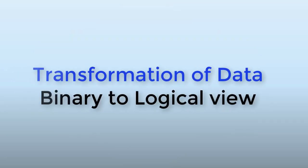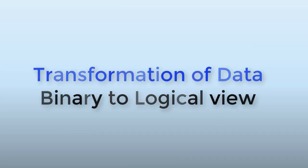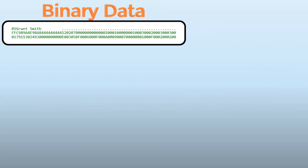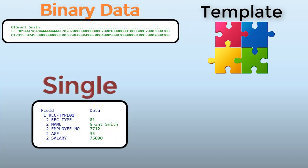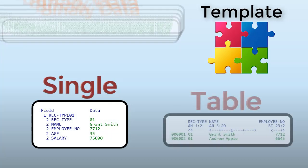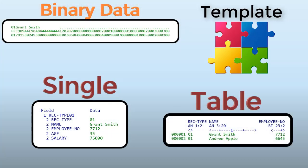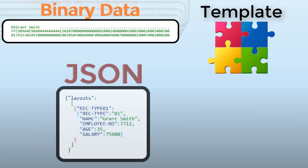Here is a simple example of the capability of ZDT to understand your binary data and the transformation from raw binary data to the logical view. We have single and table views, which are supported by view, edit and print utilities. JSON objects representing the data can also be produced for processing by the REST or API economies.